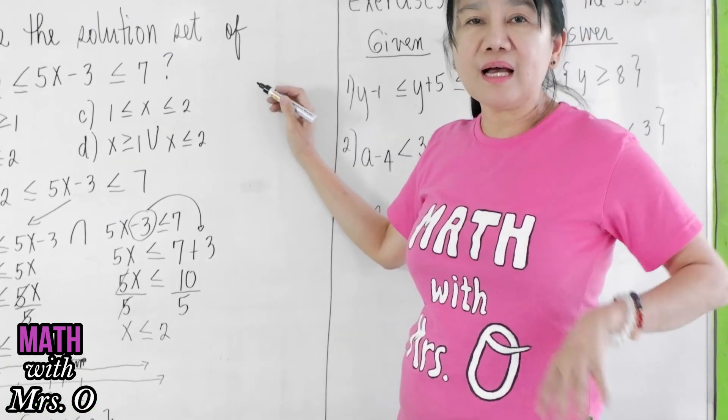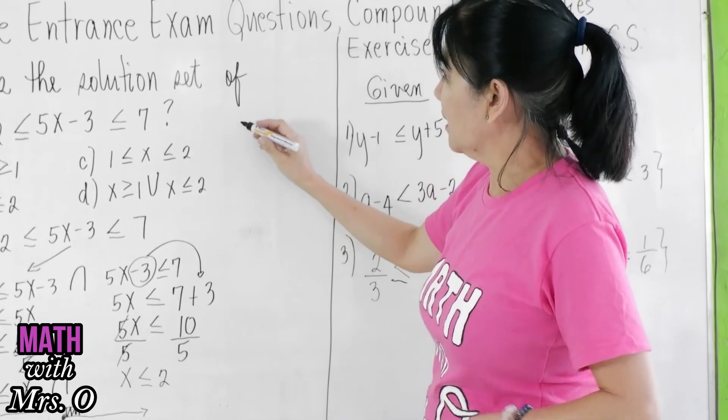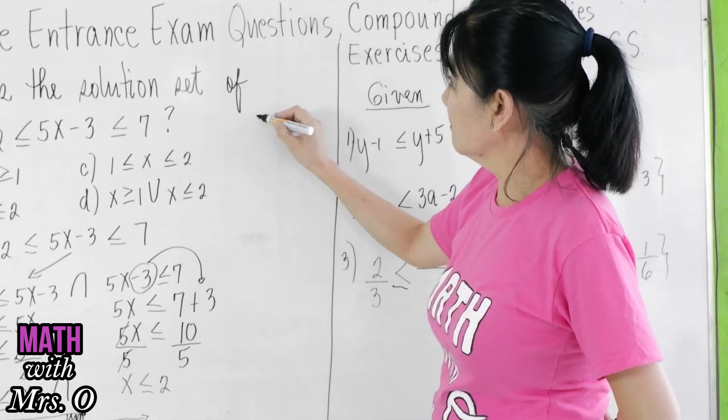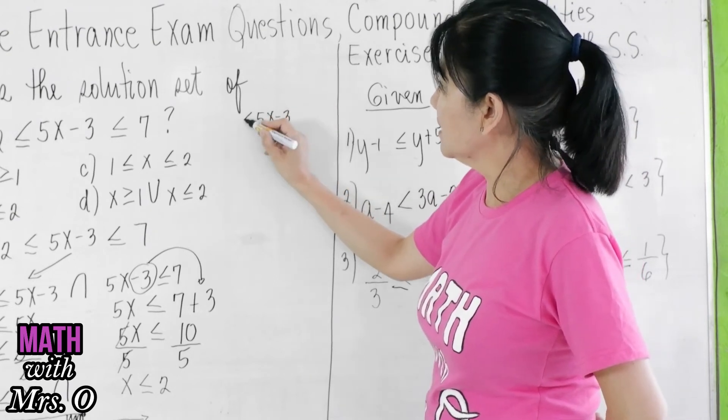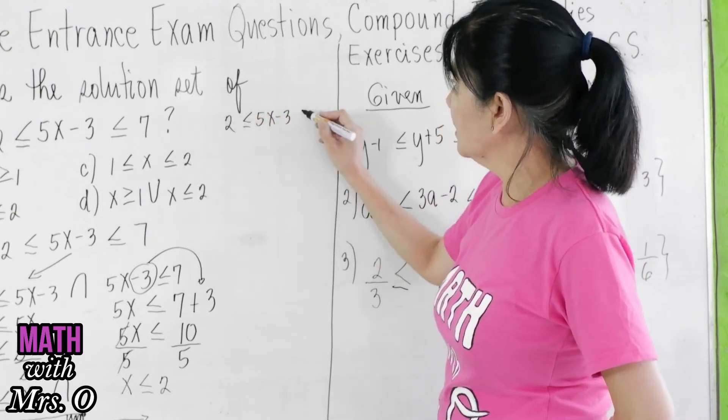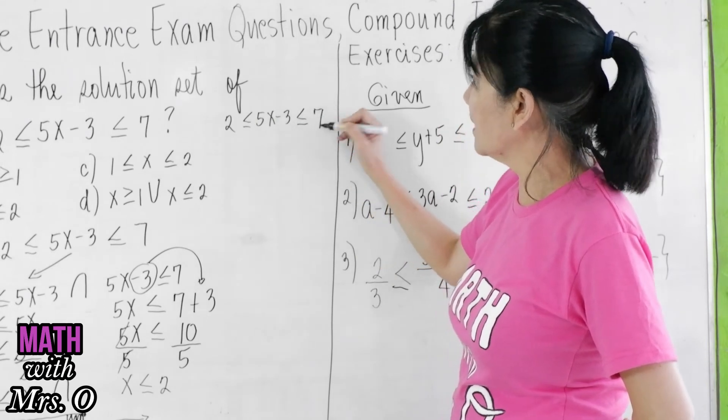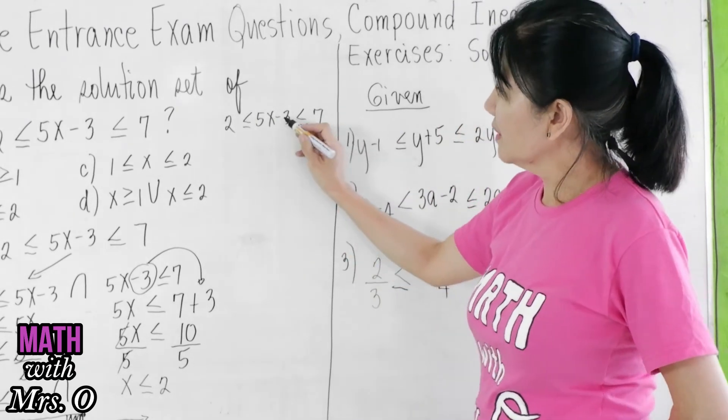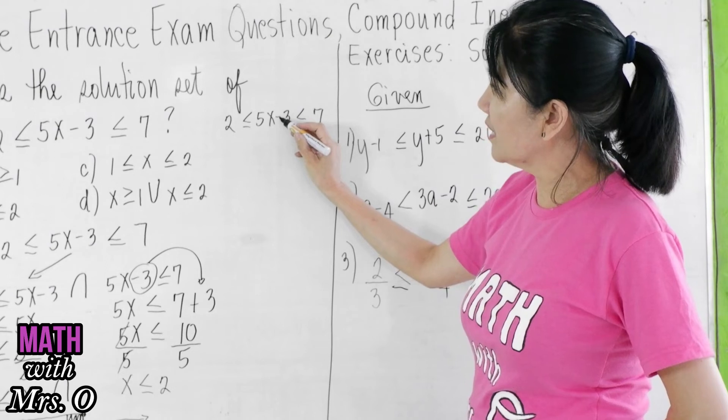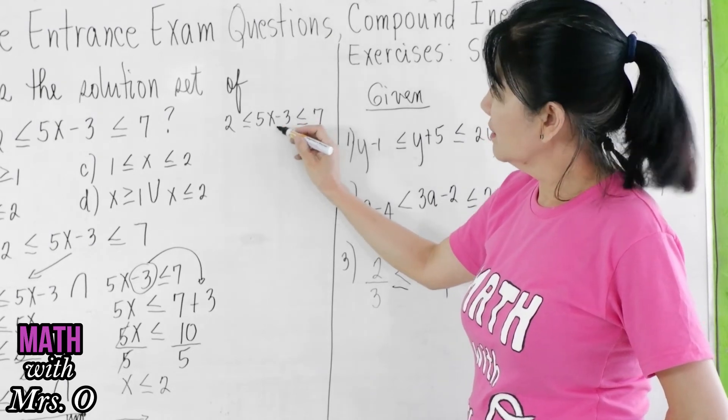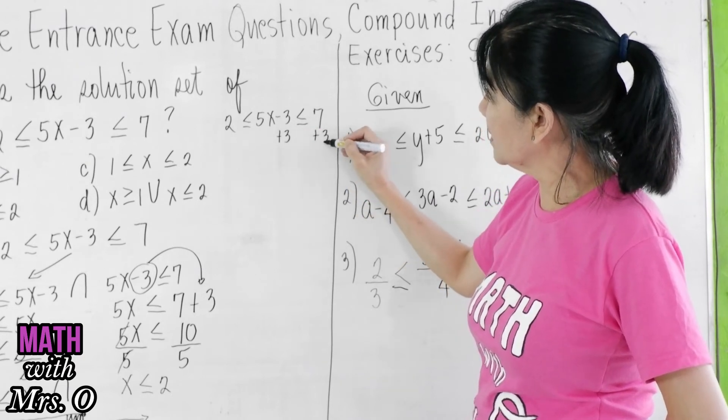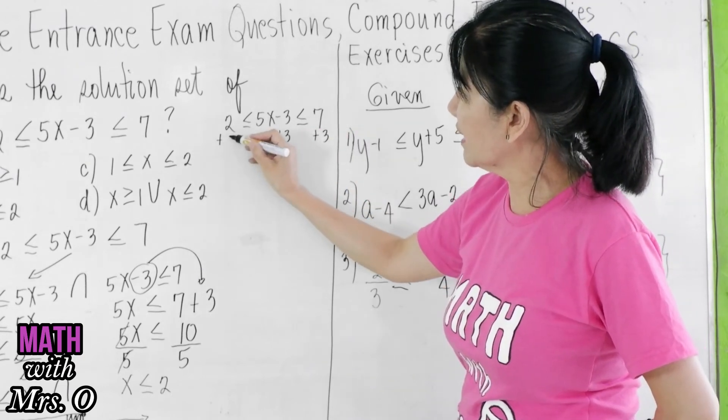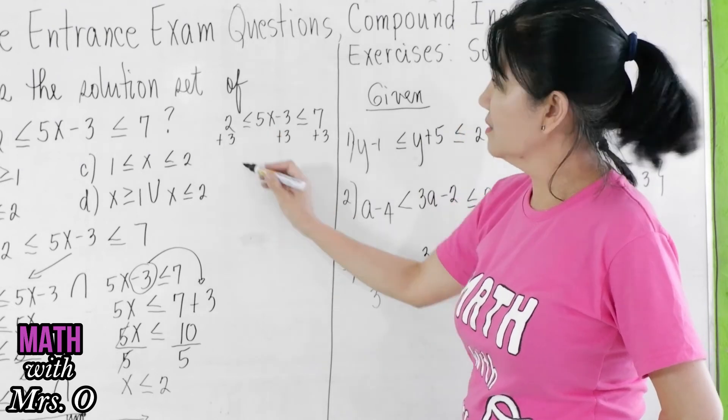Now, you can also have a shortcut here. How do we do the shortcut? If we have 5x minus 3 is greater than or equal to 2 and less than or equal to 7, for a shortcut, you want to remove negative 3 here. So you add 3 on all sides. Add 3 at the middle, add 3 to the right, and add 3 to the left.